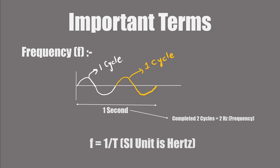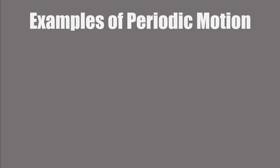It tells us how many times an object completes a cycle of motion in one second. Now that we have covered the basic ideas of periodic motion, let's explore some examples mentioned in the NCERT textbook.